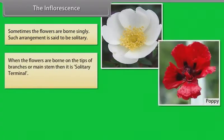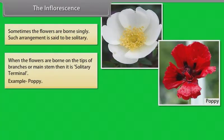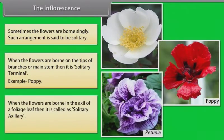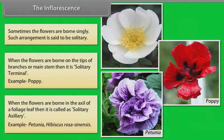When the flowers are borne on the tips of branches or main stem, it is called solitary terminal. Example: poppy. When the flowers are borne in the axil of a foliage leaf, it is called solitary axillary. Example: Petunia, Hibiscus rosa-sinensis.